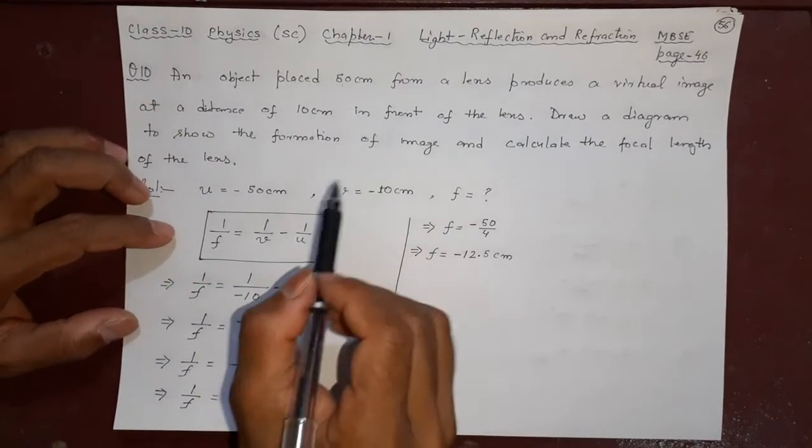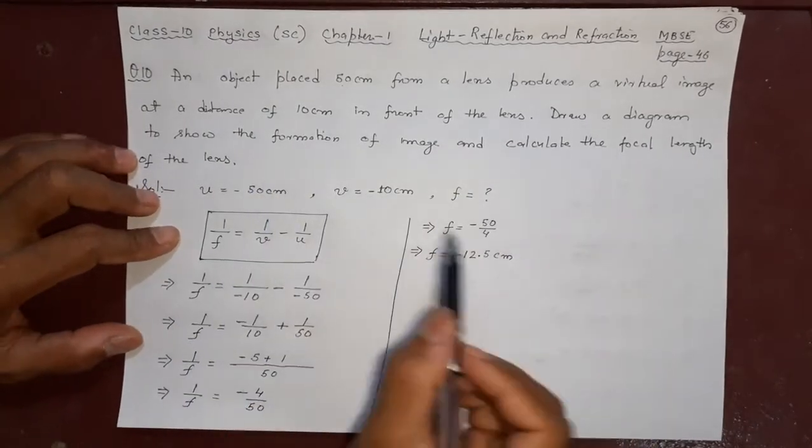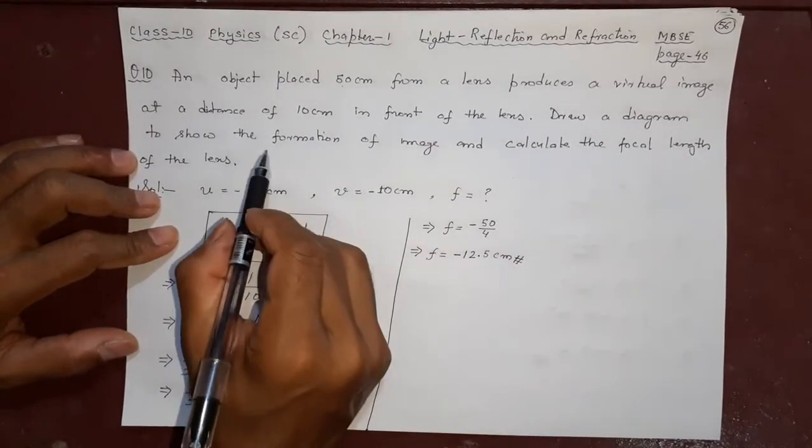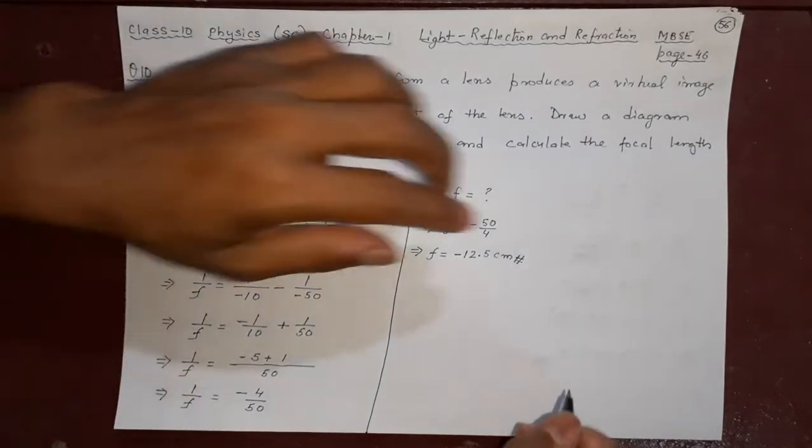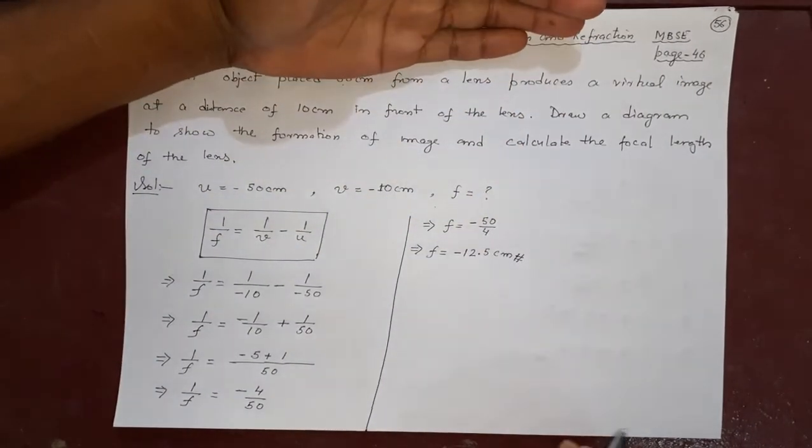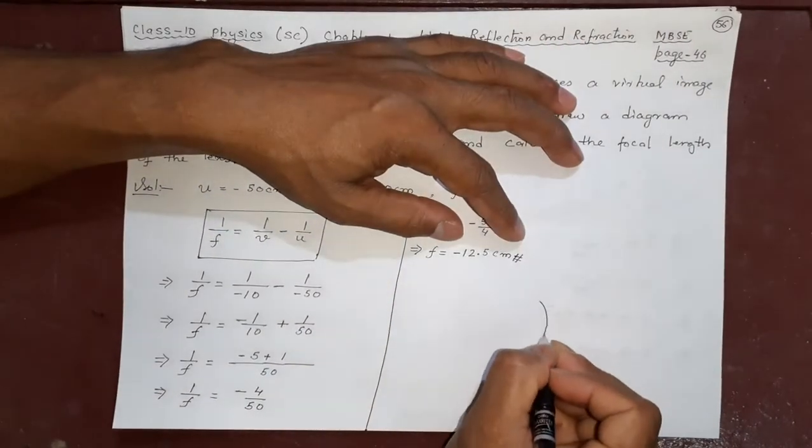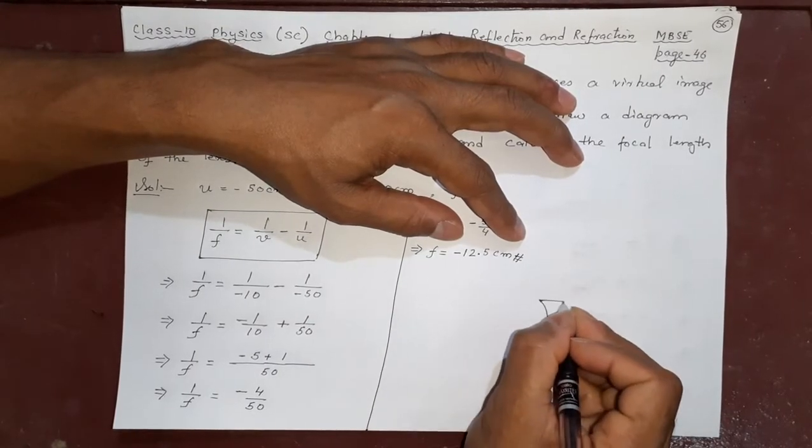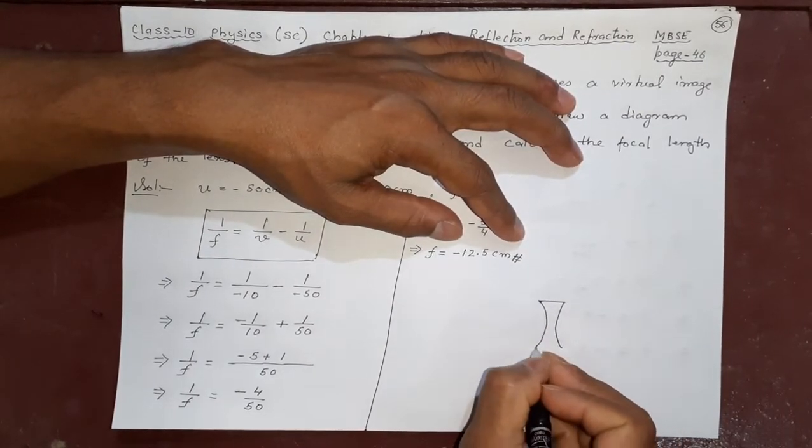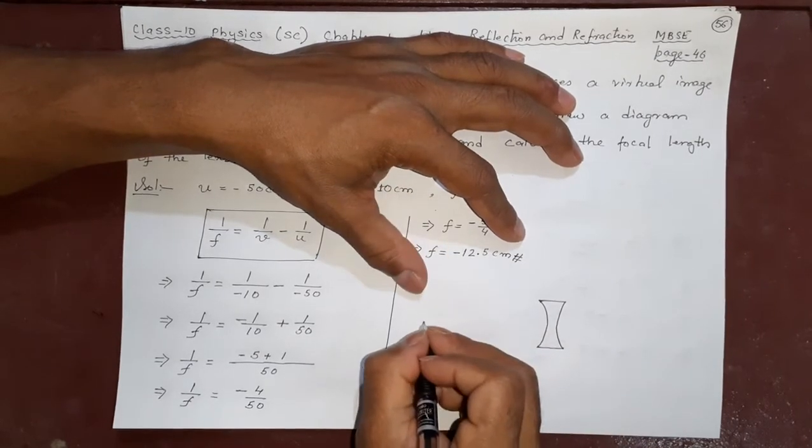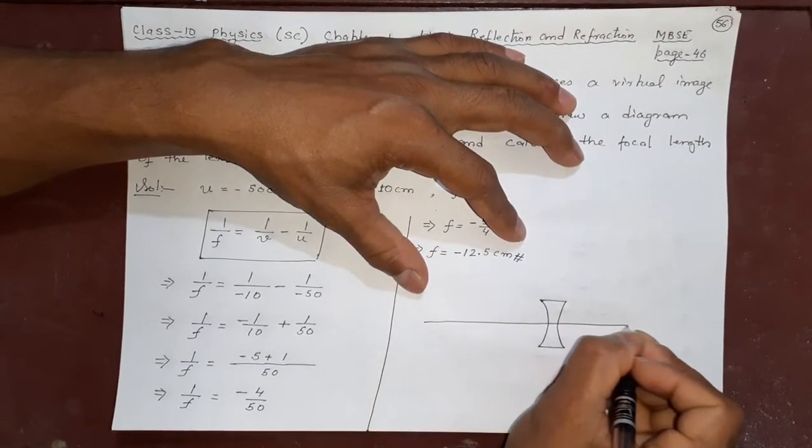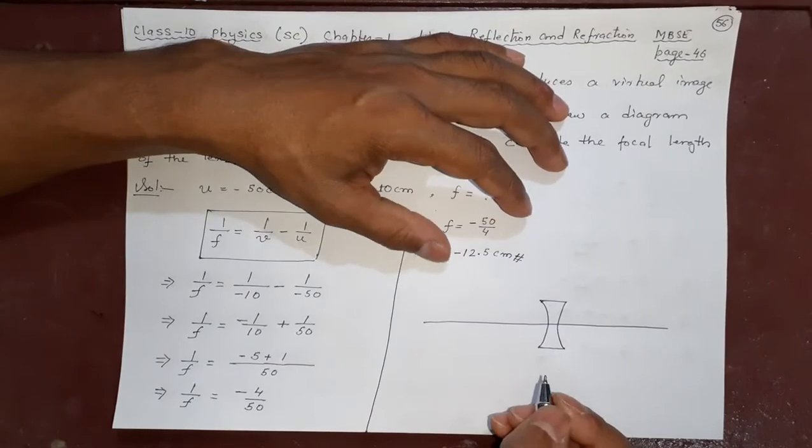Now what is left here? Calculate the focal length of the lens - we have done this. What remains? Formation of image you have to show in a concave lens. Remember, in concave lens always the same type of diagram is coming, just like in case of convex mirror which produces same image. In the case of concave lens, always same type of image.